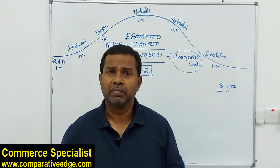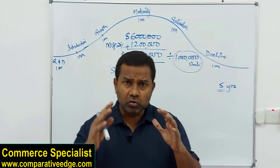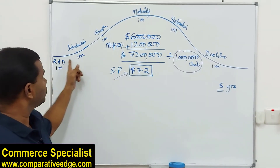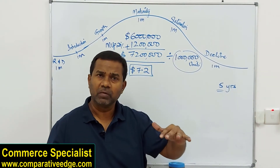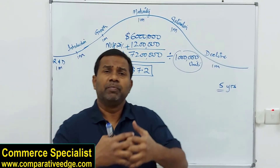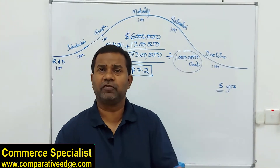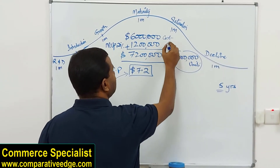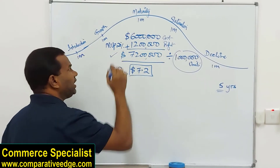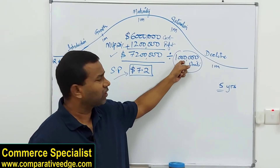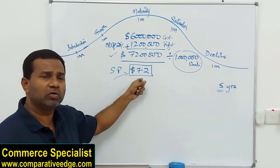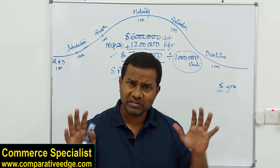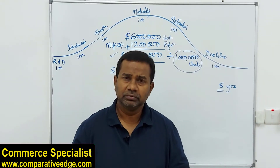Only if the answer to all three questions is yes do you go ahead with manufacturing. These are all pre-manufacturing, pre-startup decisions. You need to forecast the entire life cycle of your product, quantify the cost associated with each stage, add the profit your shareholders or owners are expecting — say 20 percent — and that gives you your total required sales. Divide by planned units sold to get your selling price per unit.